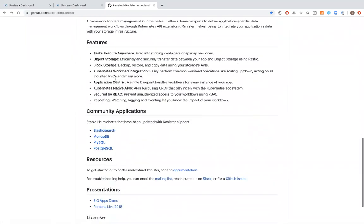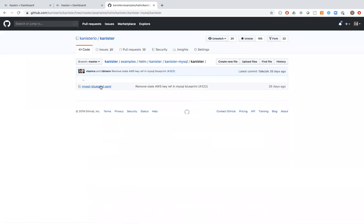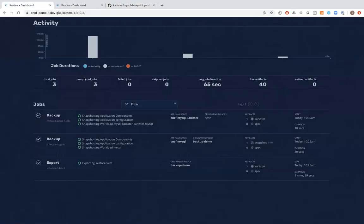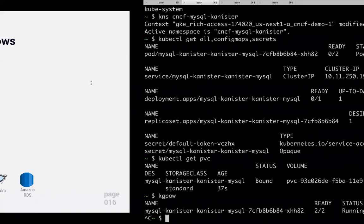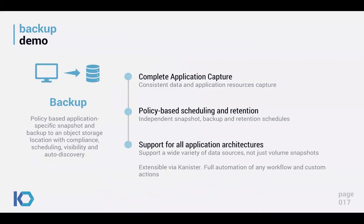Let's do a manual backup of this application. You can choose to back up everything or just specific resources — I'll back up the entire application. Back on the dashboard, the backup completed quickly since there was minimal data. You'll notice it shows a Kanister artifact instead of a volume snapshot — it's a mysqldump we took. We did not use a storage snapshot; we used mysqldump to capture the data.